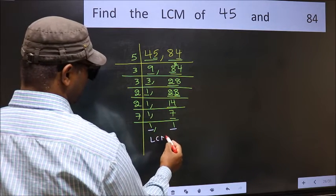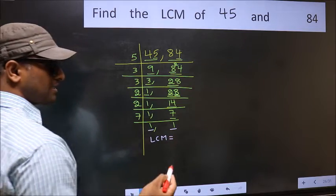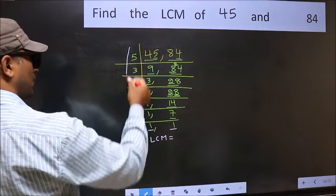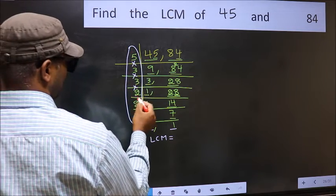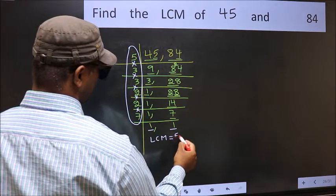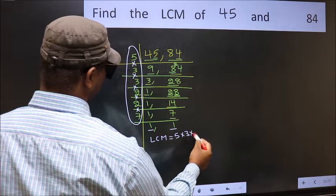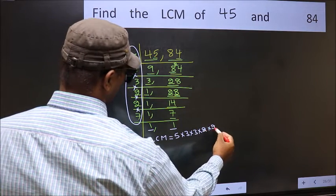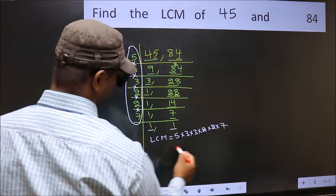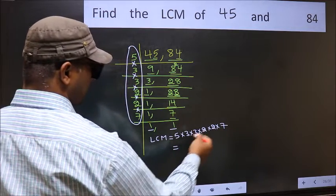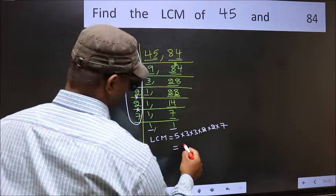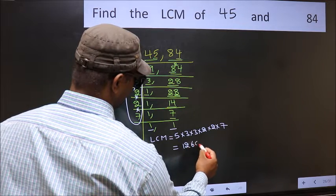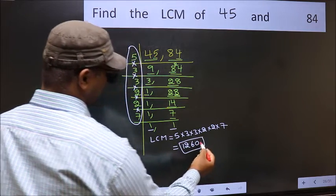So our LCM is the product of these numbers. That is 5 into 3 into 3 into 2 into 2, finally into 7. When we multiply these numbers, we get 1260. So our LCM is 1260.